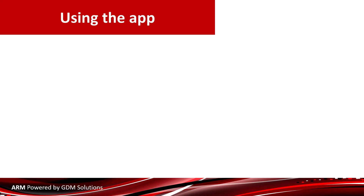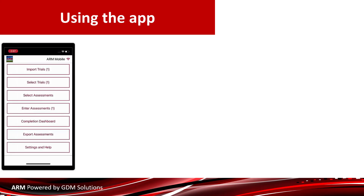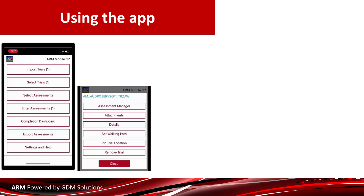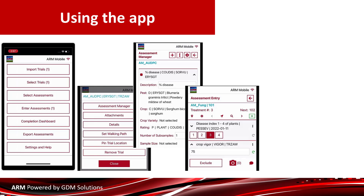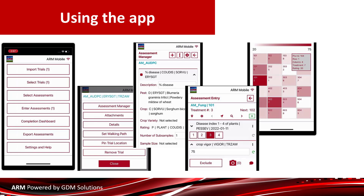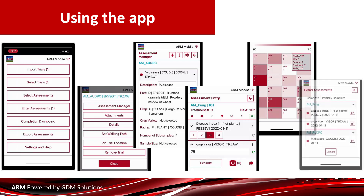Taking notes with ARM Mobile is as easy as: importing trial definitions from cloud storage — please note, internet is required for this step. Then, select the trials to rate during the note-taking session. Next, select or create assessment columns to take data. Now record the data; this can include pictures or comments, and the value can also be excluded from analysis. Review the assessment with the heat map to catch issues and review the assessment before leaving the site. Finally, export the data back to the cloud — internet is required for this step as well.